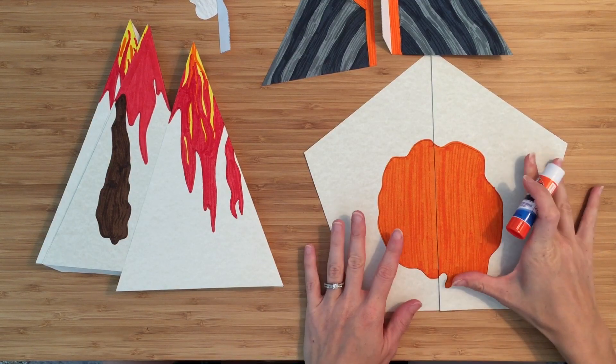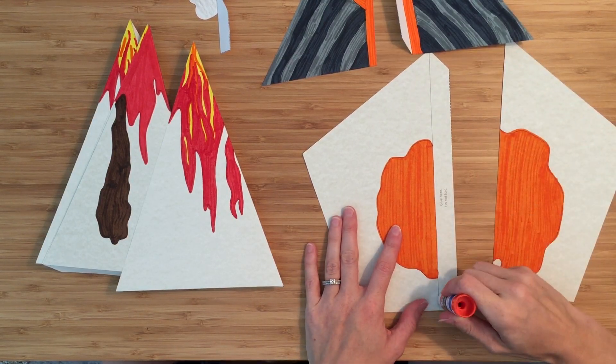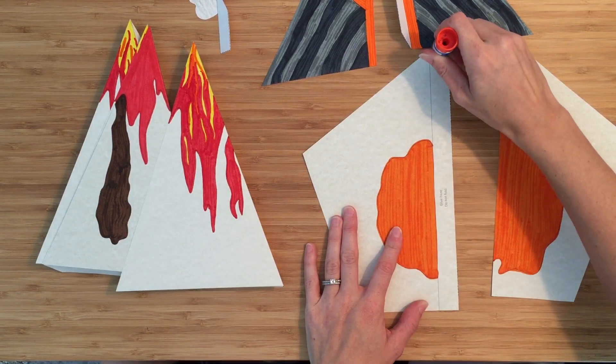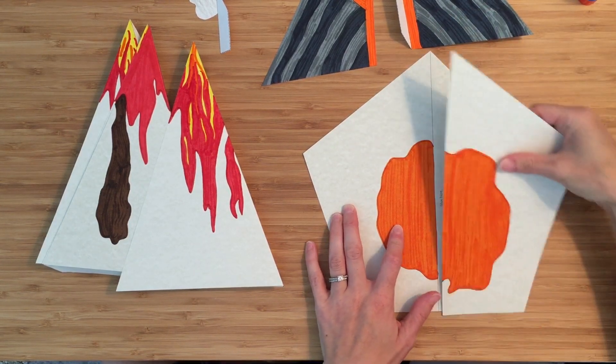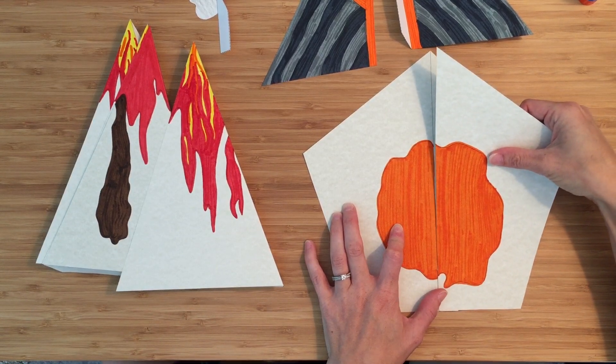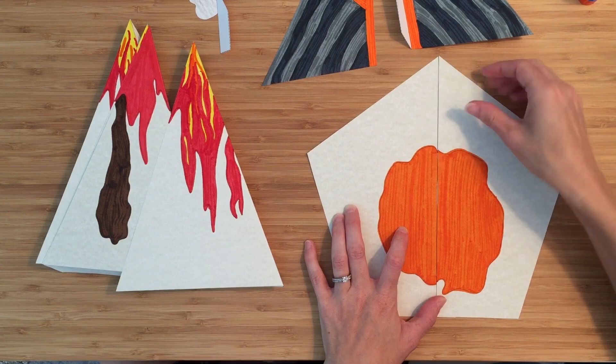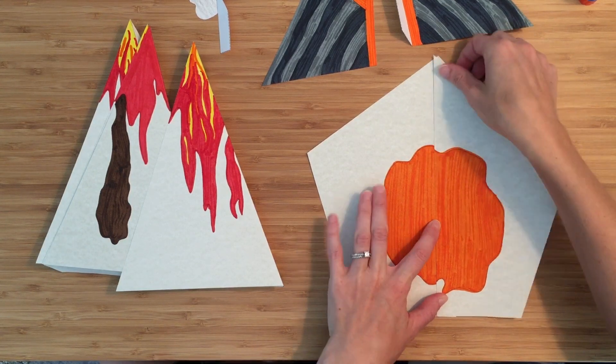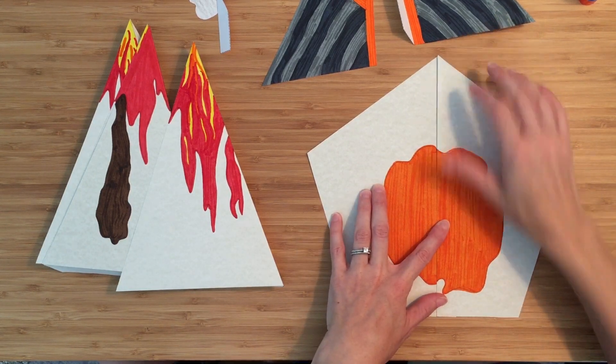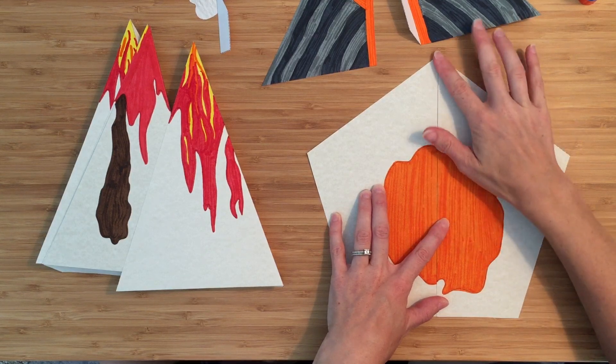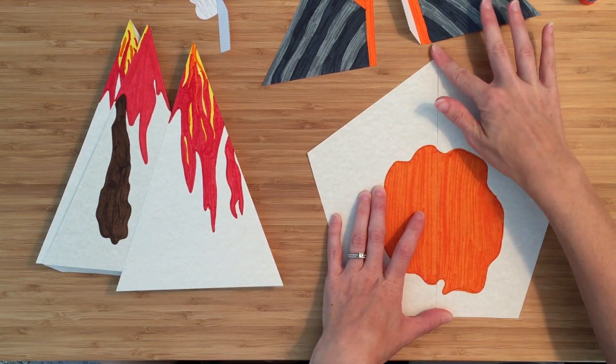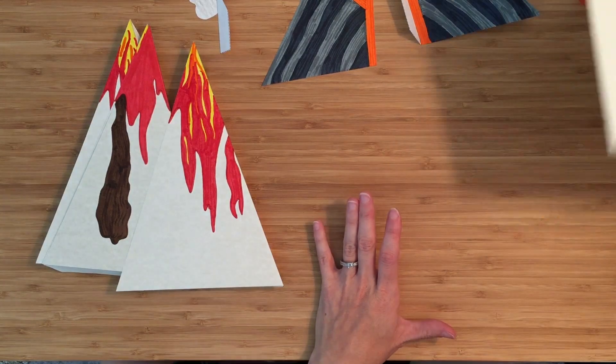Let's put this thing together. I'm going to start with the base. And I'm going to put glue right here. And then line up the bottom. And the line and the point. And press it together. Oops.